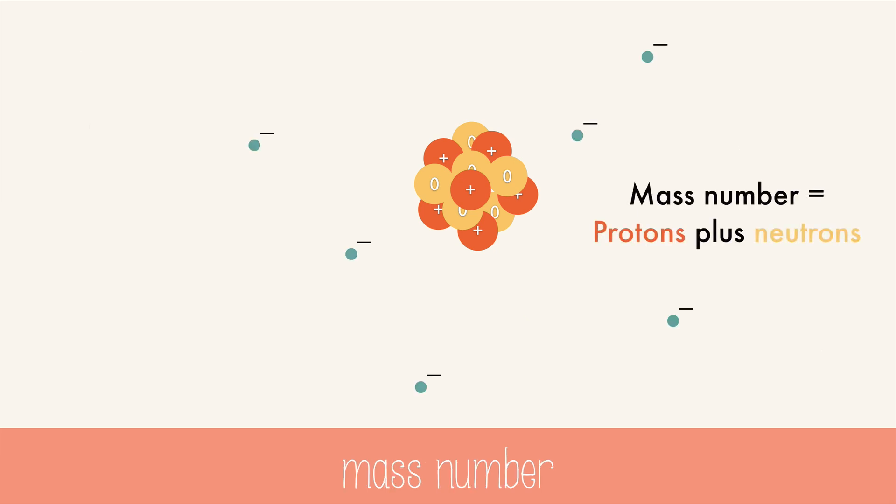The mass number is the number of protons plus the number of neutrons. If you add up the atom, there are 6 protons and 6 neutrons, making the mass number 12.